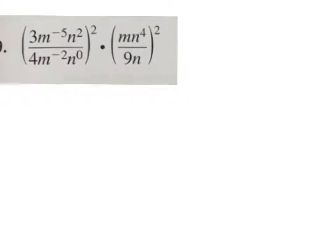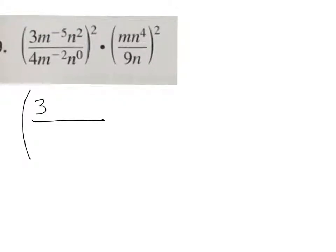When it asks us to simplify, before I can multiply this by this, I have to first square them both. So I've got to take everything in here and square it, and everything in this first parenthesis and square it. But before I even square it, I need to simplify what's inside the parenthesis. 3 over 4 won't simplify, so I'm going to write 3 over 4. I'm going to take this m to the negative 5 and move it to the bottom to make it positive, so I've got m to the fifth on bottom. And I'm going to take this m to the negative 2 and move it to the top — m squared.